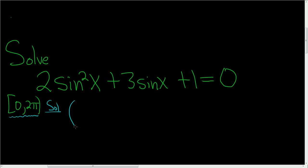Let's go ahead and try to factor this. So 2sinx in parentheses, and then parentheses sinx. 2sinx times sinx gives us 2sin²x, so that part's okay. Now we just need two numbers that multiply to 1. Let's try 1 and 1, so plus 1 and plus 1.